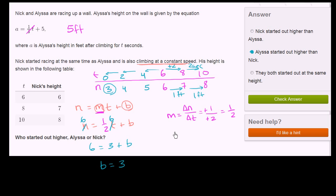You get Nick's height as a function of time. Nick as a function of time is going to be equal to 1/2t plus 3. So now we have an equation just like Alyssa's. And we can say, well, when time is equal to 0, he's at a height of 3, which is lower than Alyssa's initial height.